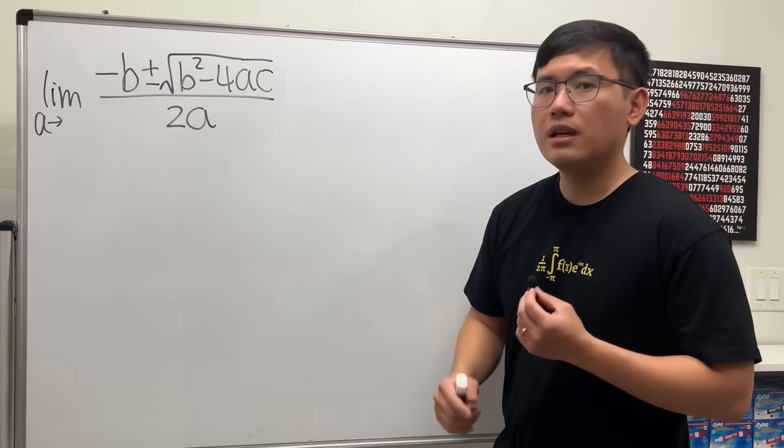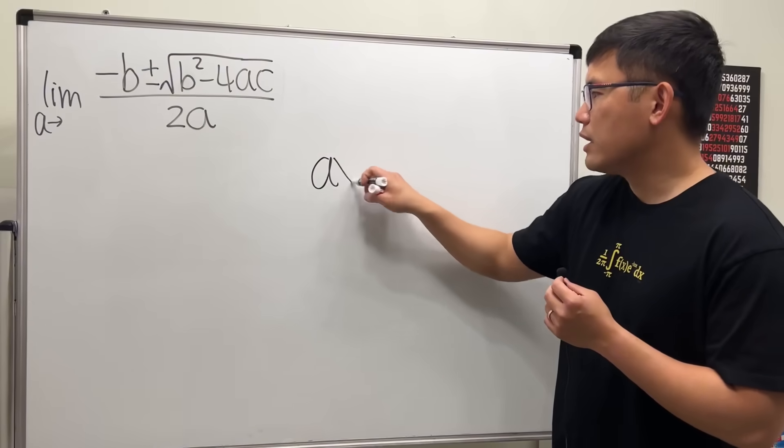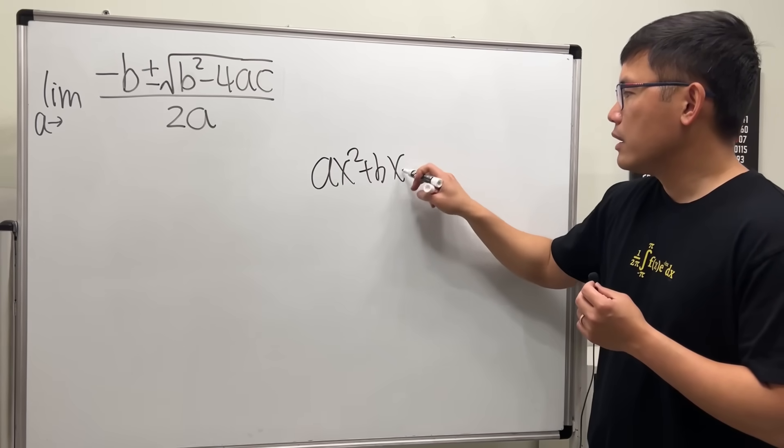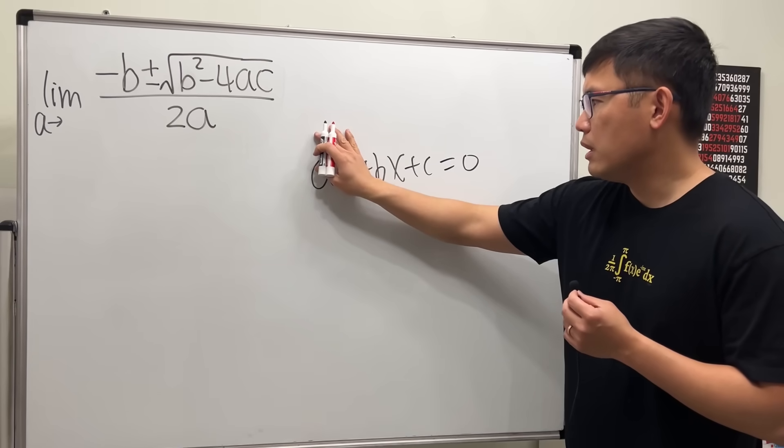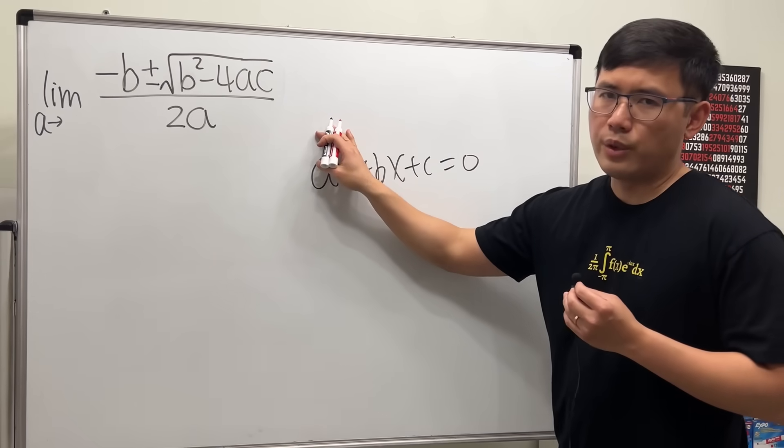If you see a approaching zero, you can make the bottom zero to make this interesting. However, if a is approaching zero, we don't really have this term and this is not really a quadratic equation.